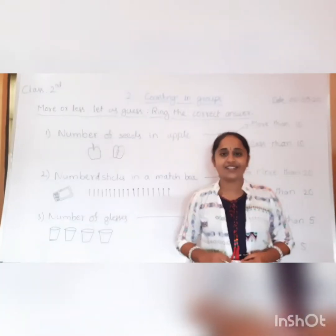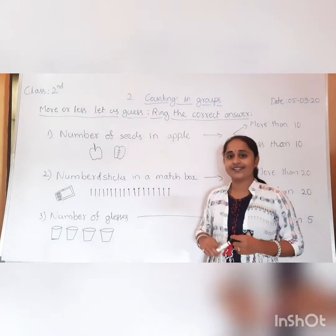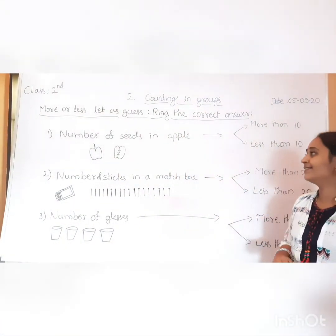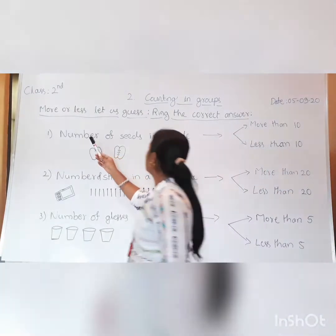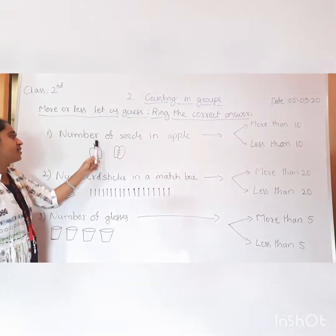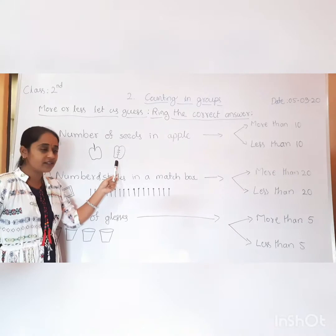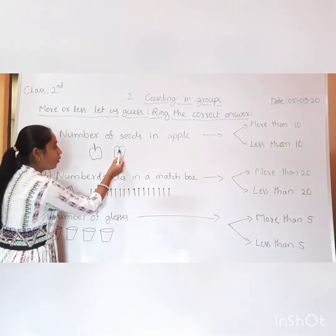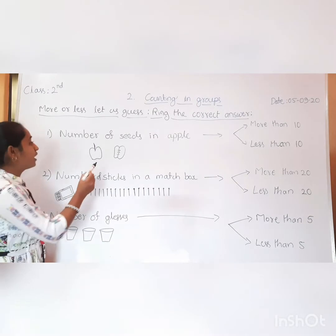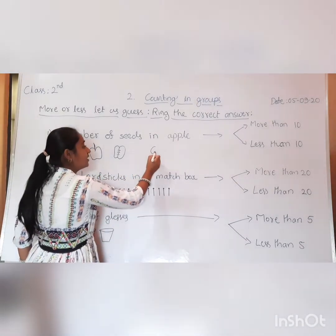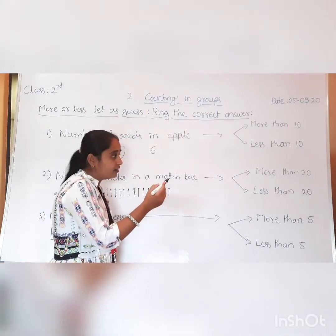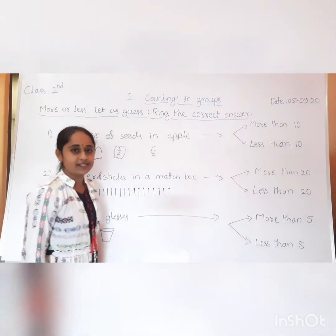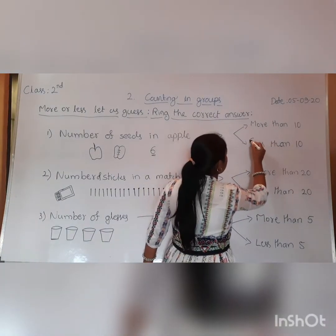Have you understood? Students, let us now do more or less. Count the numbers and find the answer. Our first question is: the number of seeds in an apple. In this apple, how many seeds are there? Count: one, two, three, four, five, six. The number of seeds is six. Is six more than ten or less than ten? We have six.